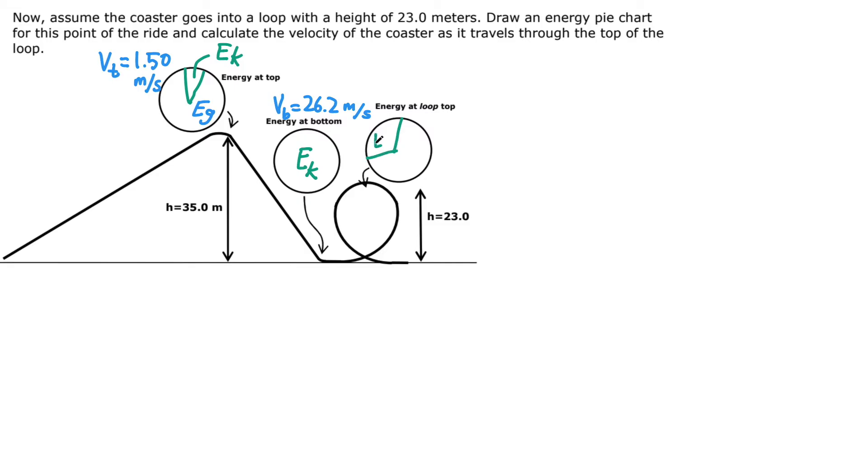The rest of the energy total comes from gravitational potential energy, and because we know energy is conserved, the total energy in each of these pies is the same.